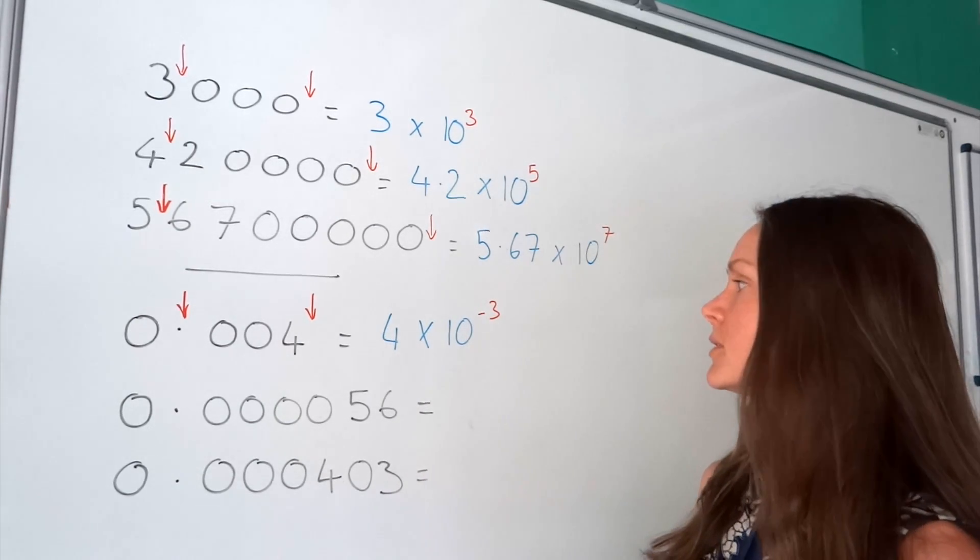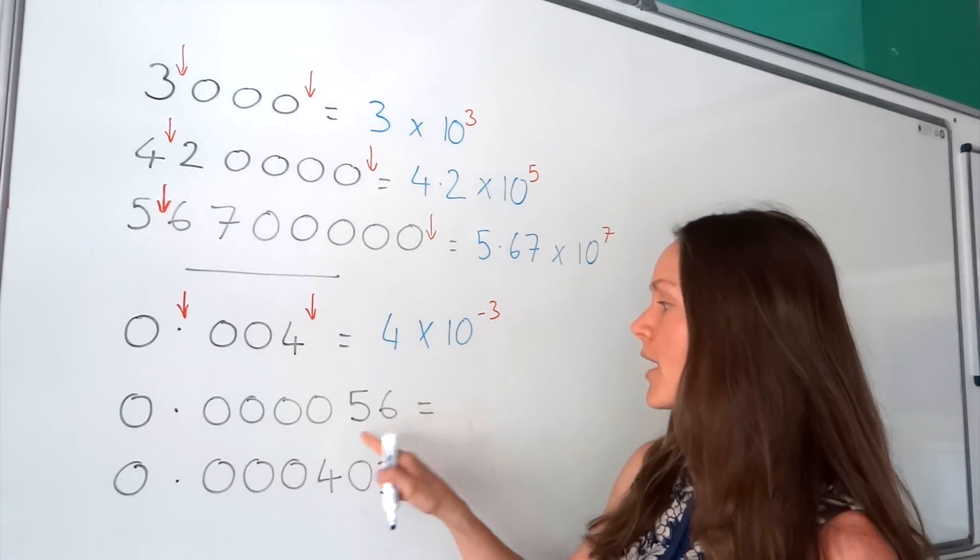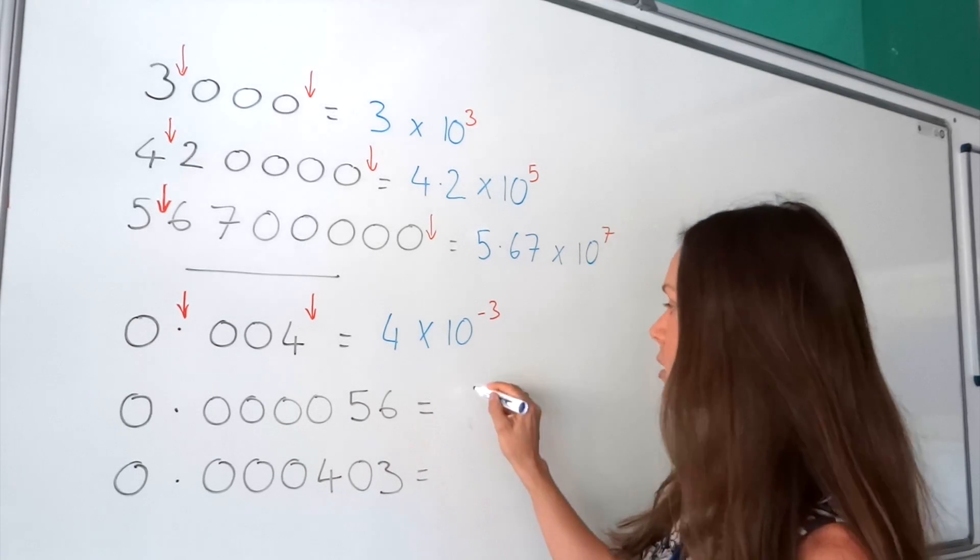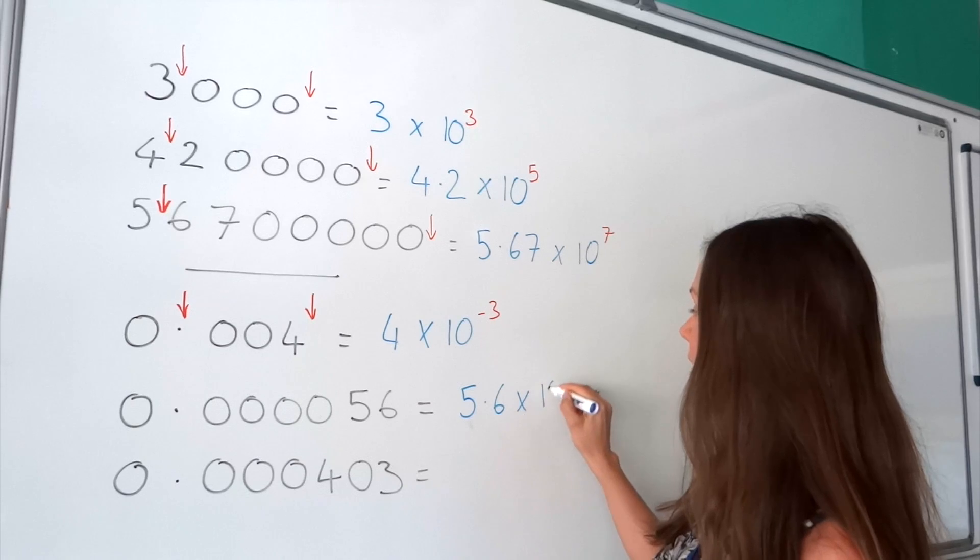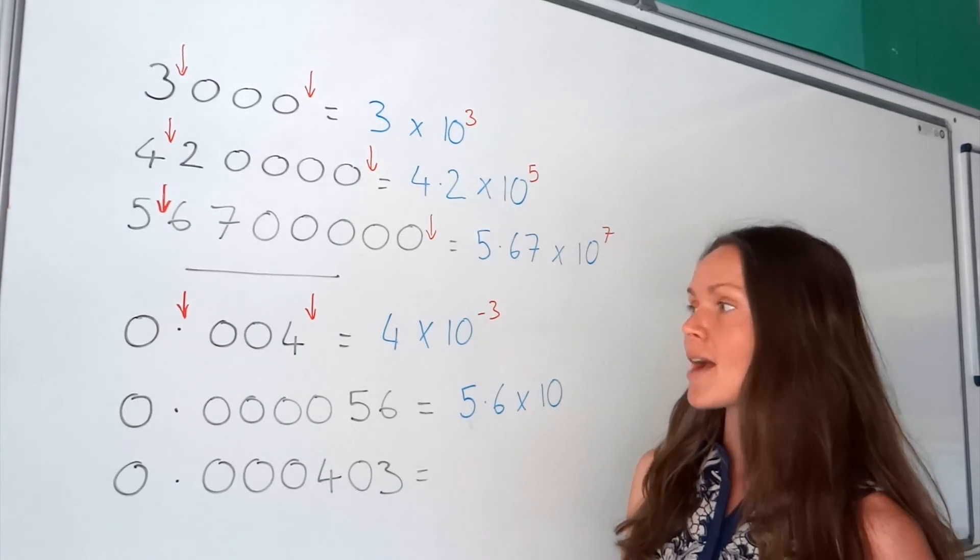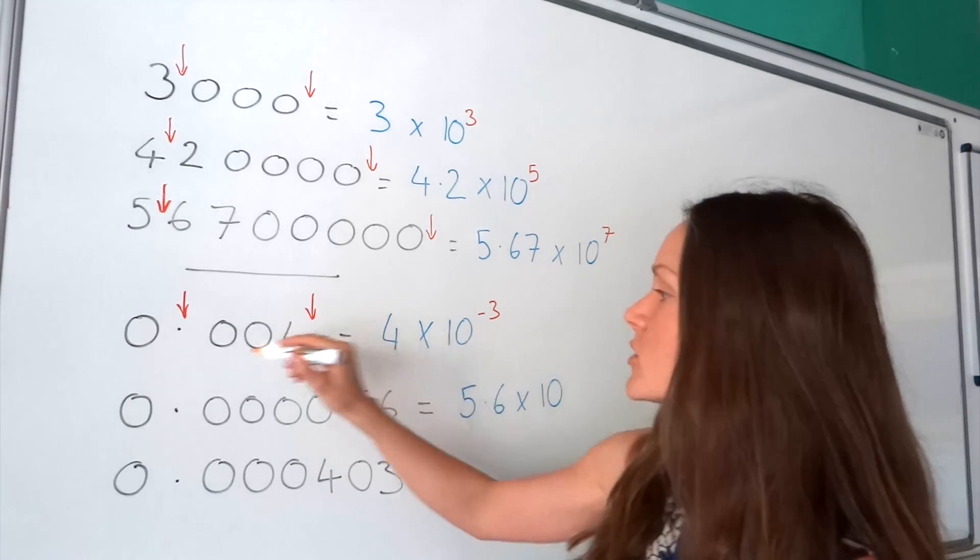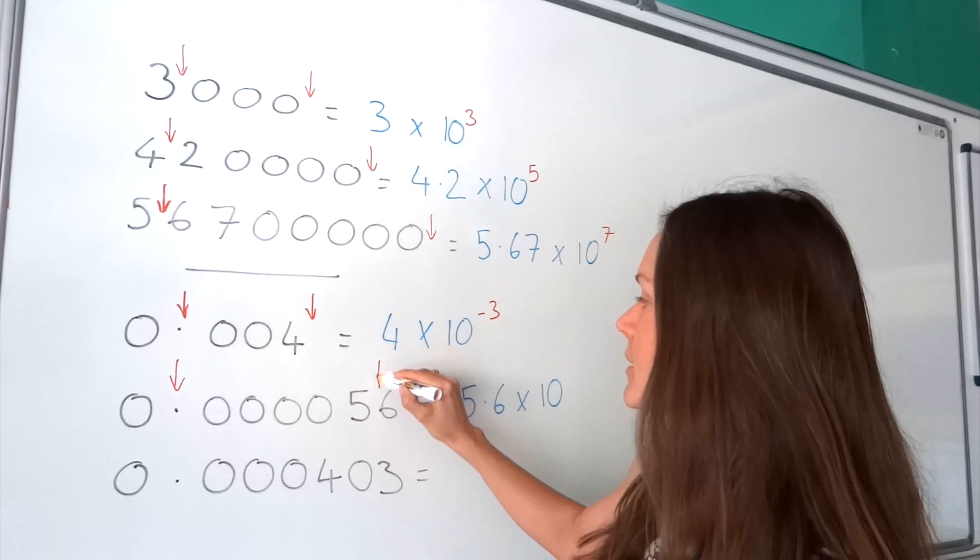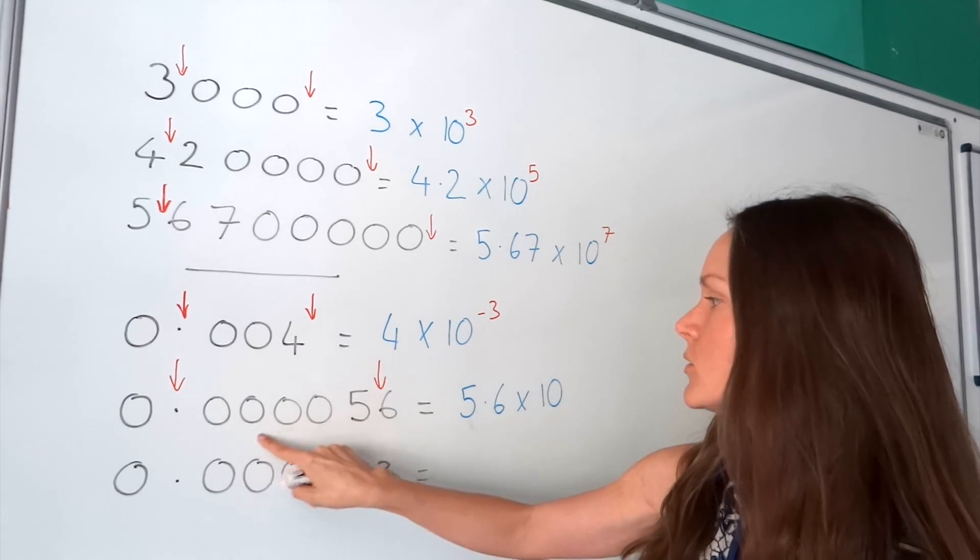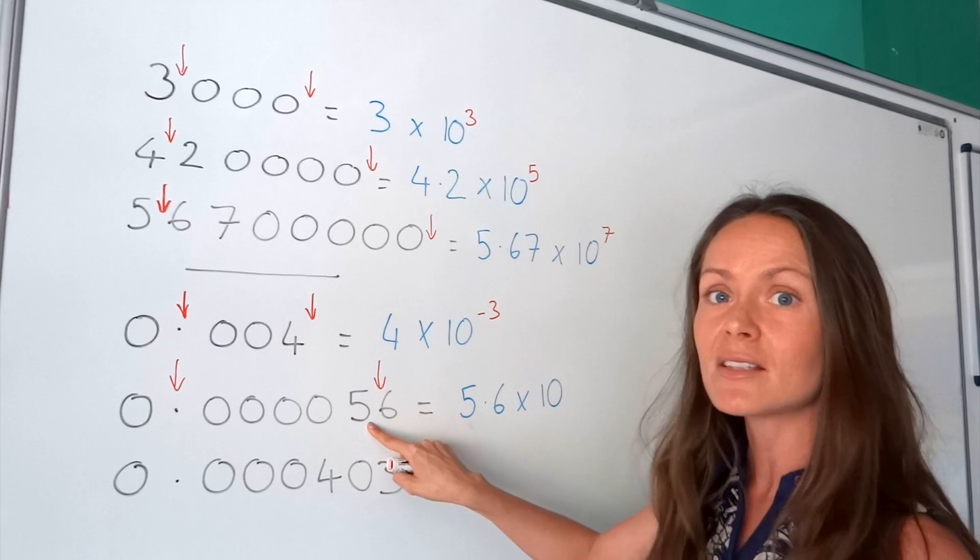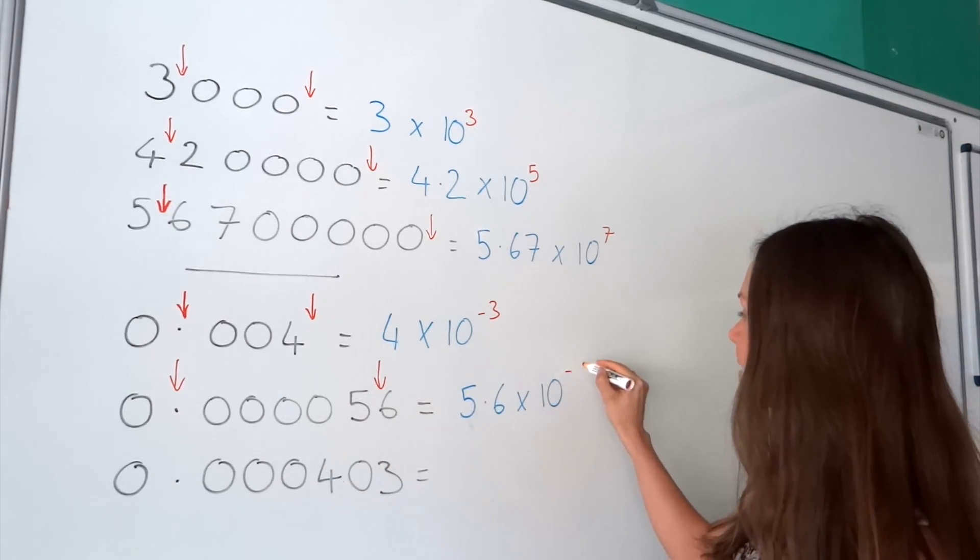Okay, the next example, same thing as before. Write the number between 1 and 10. So this becomes 5.6. Then we write times 10. And then you count to see how many places the decimal has moved. So it used to be here. Now it's here. So it's moved 5 digits. I'm counting 1, 2, 3, 4, 5. So the power on this one is negative 5.